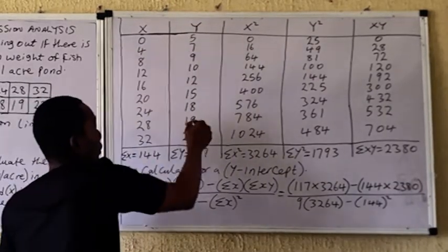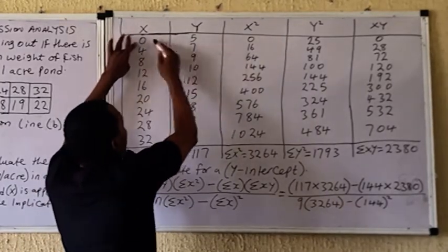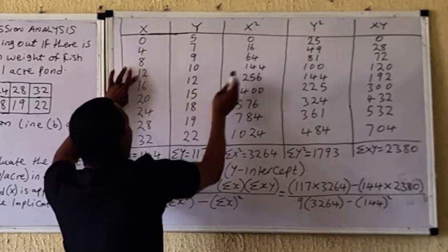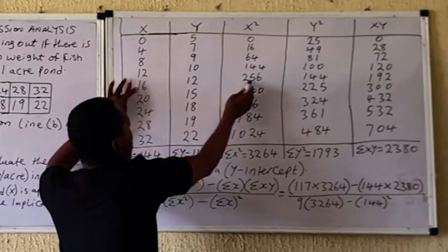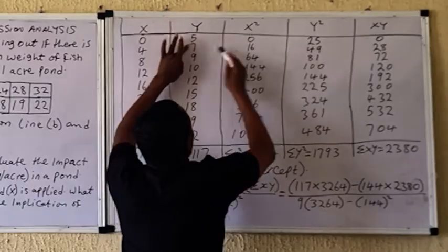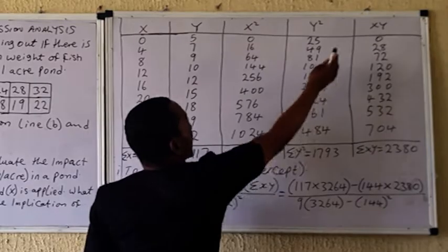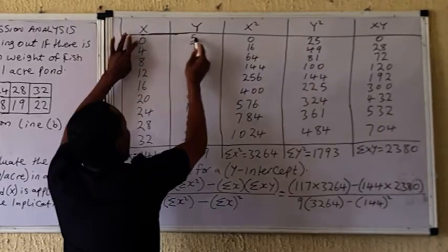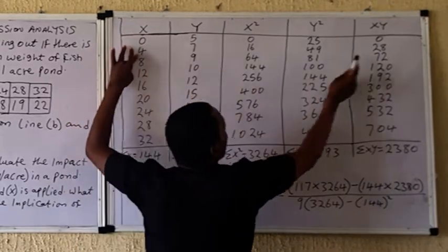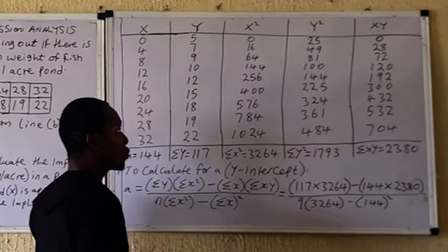As usual, x is given and y is given. For x-squared, you take the square of each x value: 0 squared is 0, 4 squared is 16, and so on. For y-squared: 5 squared, 7 squared, 9 squared, and so on. For xy: 0 times 5 is 0, 4 times 7 is 28, 8 times 9 gives the next value, and you continue down.